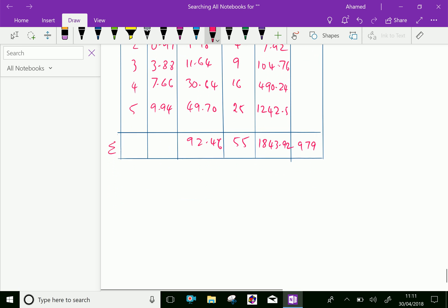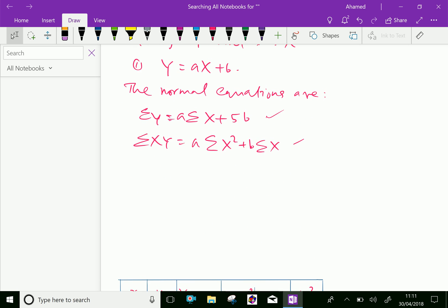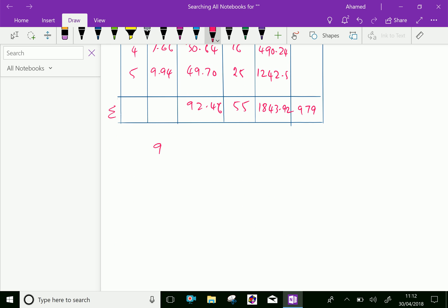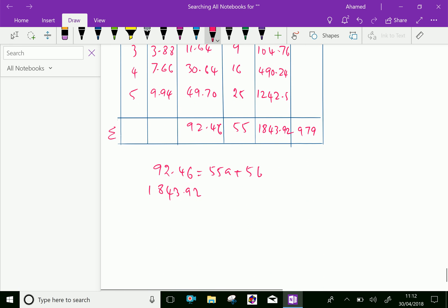Substituting these values into the normal equations: 92.46 equals 55a plus 5b, and 1843.92 equals 979a plus 55b.